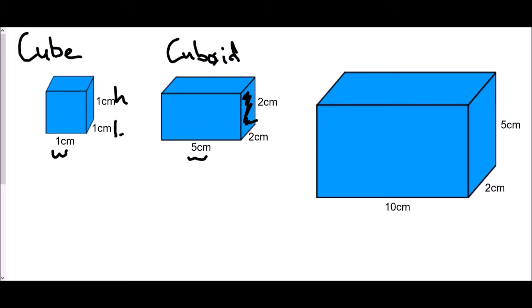Finally, we have a shape where all three dimensions — the height, the length, and the width — are all different. But every face of the 3D shape is a rectangle, so this is also known as a cuboid. Volume is the capacity of a 3D shape — how much could you actually fit inside it. Our units are going to be centimeters cubed, because we have three dimensions working together.